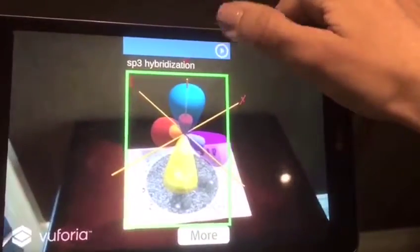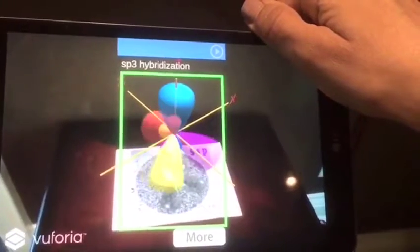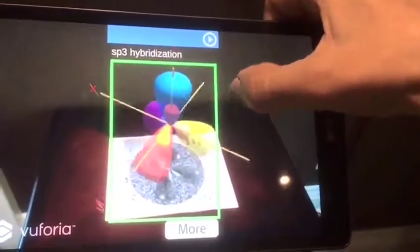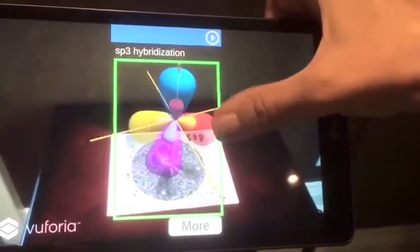The next image shows the sp3 hybridization and its tetrahedral orientation, and you can rotate 360 degrees and visualize from different angles.